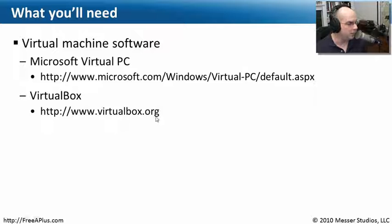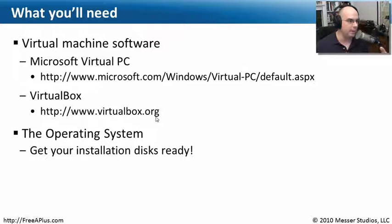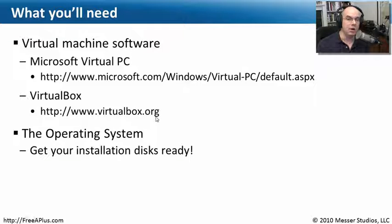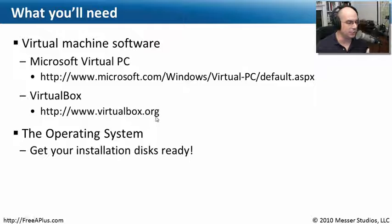Now that you have the virtual machine software, you'll also need operating system software. The virtual machine software essentially gives you a computer to work with, but obviously you need an operating system to install on it. So you're going to need your Windows 2000 setup CDs, Windows XP setup CDs or DVDs, and Windows Vista setup DVDs — the original media along with all the things that come with that operating system. You're going to need the license keys and fully licensed versions of these operating systems to load onto these virtual machines. That's a pretty important part of this — that's where you'll need to have these operating systems available or purchase them.